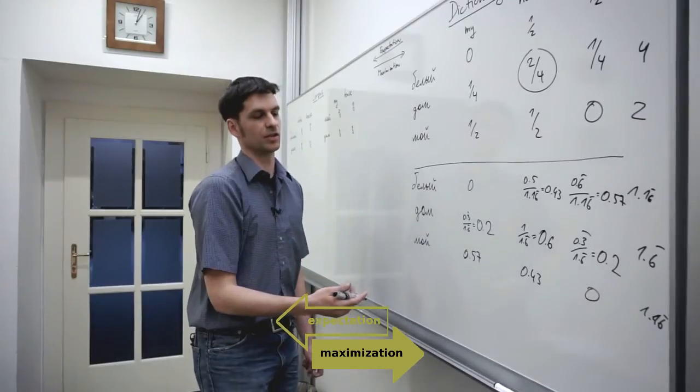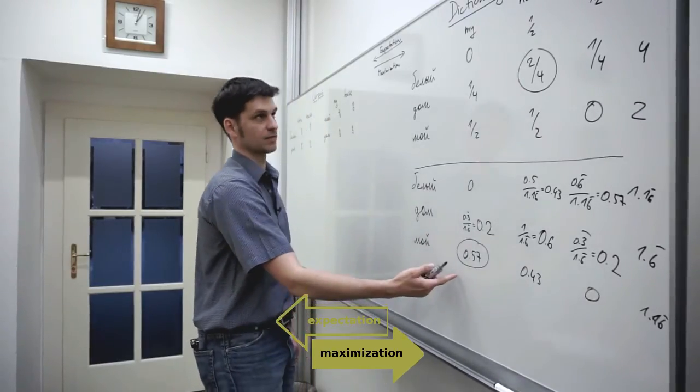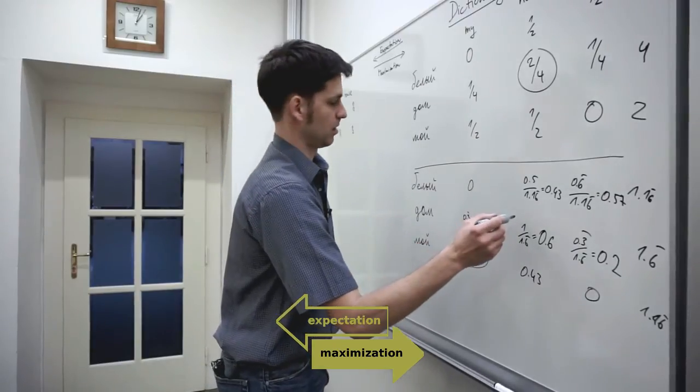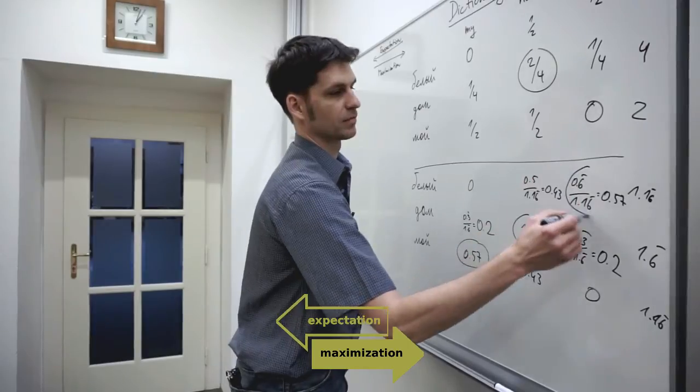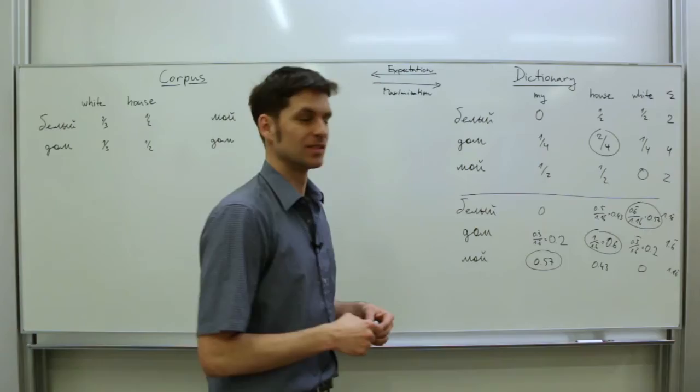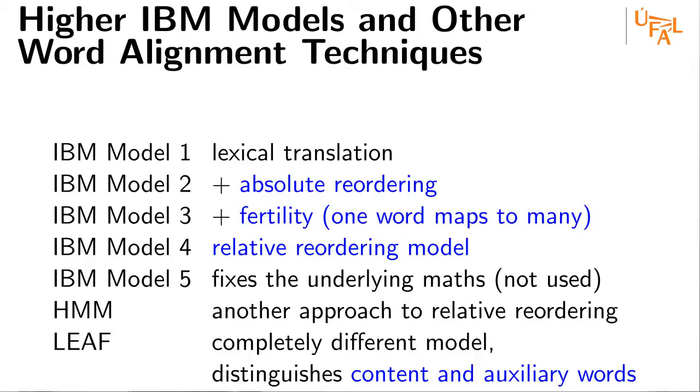So after this iteration, we already clearly see that MOI is best translated as MI, DOM is best translated as house and BLE is best translated as white. So this was IBM model 1, the simplest of models for word alignment. It's pure lexical, it considers only word forms as they appear in the data and it doesn't consider where they appear in the sentence.